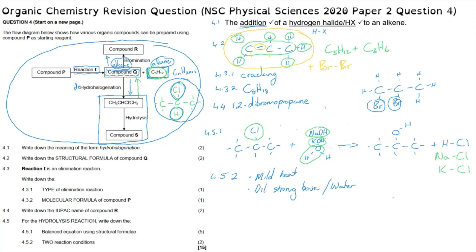Looking at the mark scheme: question 4.1 has one mark for identifying hydrohalogenation as an addition reaction, and specifically the addition of a hydrogen halide. Question 4.2 requires the structural formula with all relevant hydrogens so every carbon forms exactly four bonds, showing the alkene formation. Question 4.3.1 is one mark for cracking reaction. Question 4.3.2 is one mark for C8H18.